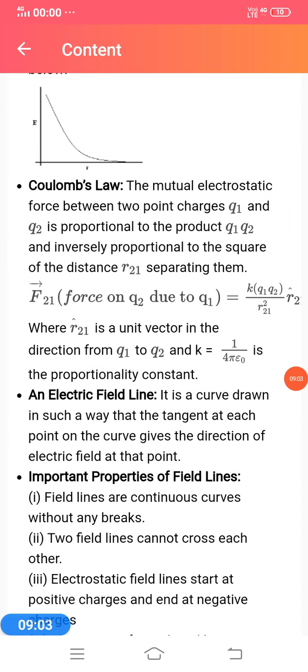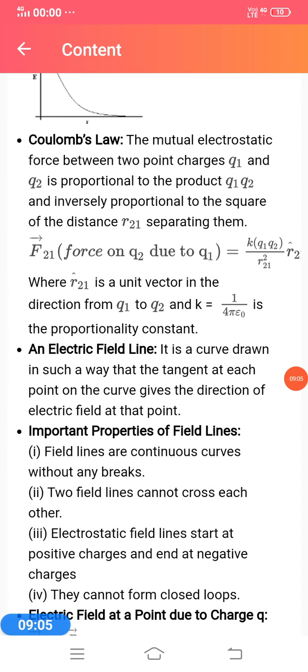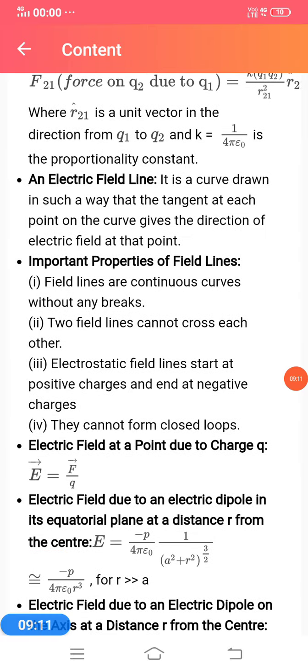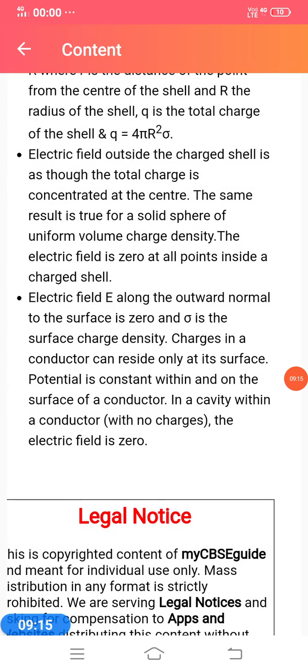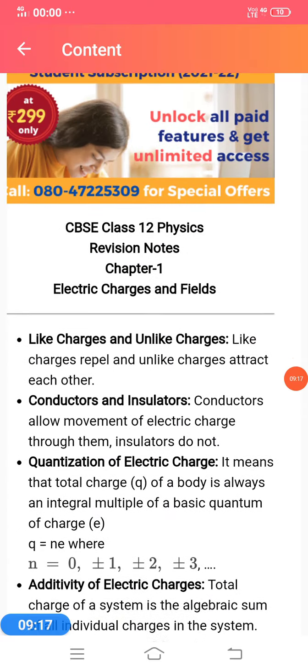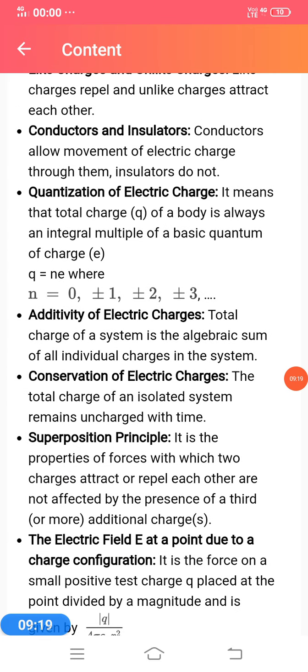An electric field line is a curve drawn in such a way that the tangent at each point on the curve gives the direction of electric field at that point. These are important properties and formulas.